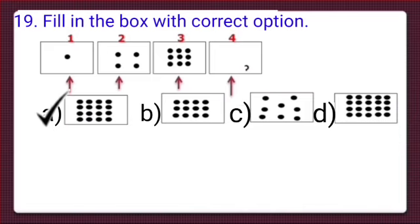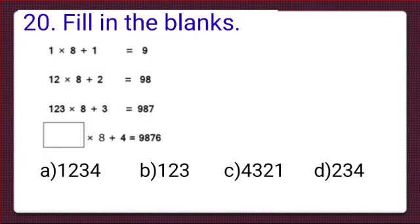Number 20: fill in the blanks. In the first line, 1 × 8 + 1 = 9. In the second line, 12 × 8 + 2 = 98. In the third line, 123 × 8 + 3 = 987. And in the fourth line, there is a box × 8 + 4 = 9876. We have to choose the right option to fill this box. A pattern is followed here.